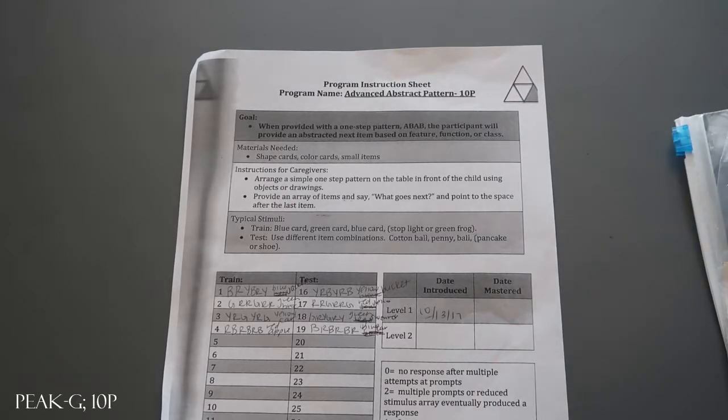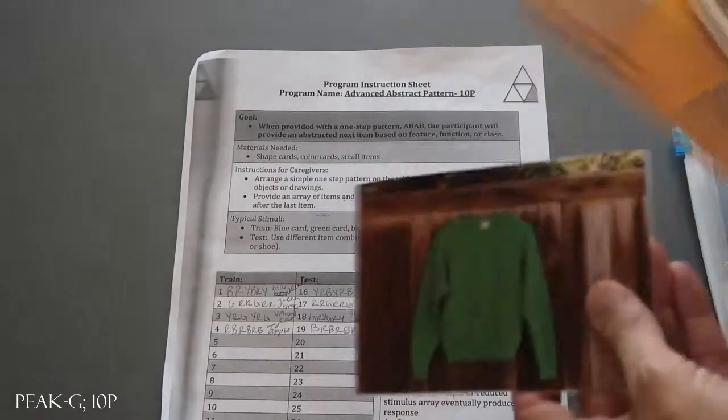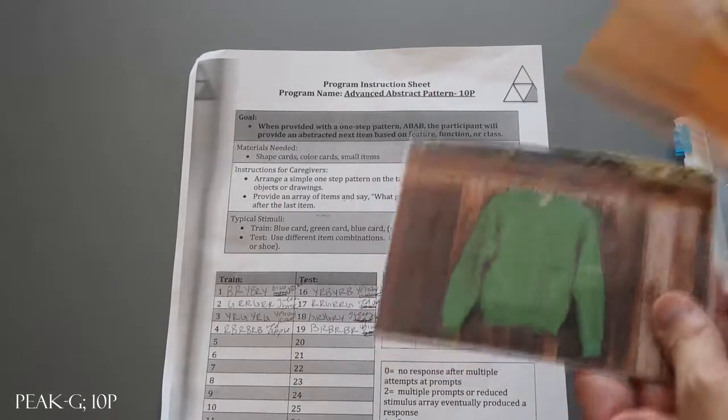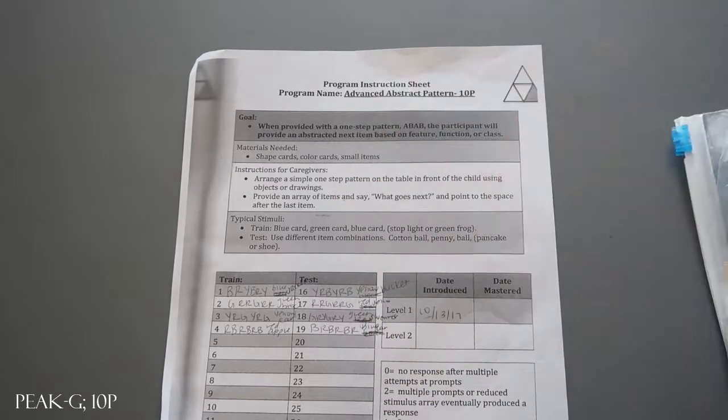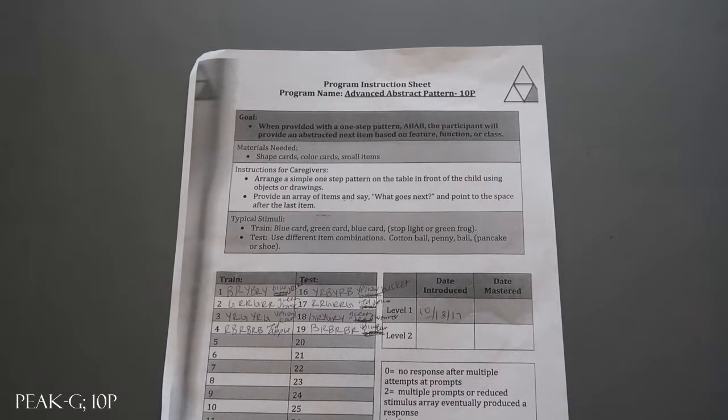You're going to have a test set and a train set of the items that you're going to need for this pattern. So we have a green shirt, a yellow bucket, red jello, and a blue car. You want to keep in mind that if you're using pictures to not have too much color in the background because it could be very confusing and misleading when they're trying to make these patterns.